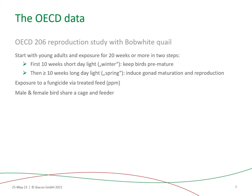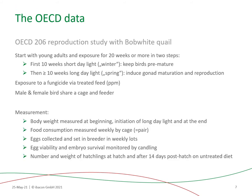We tested this physiological module against an OECD-206 reproduction experiment performed with white quail. As explained in the previous slide, this experiment started with young adults and lasted 20 weeks. In the first 10 weeks, the birds were kept immature, then gonad maturation and reproduction was induced. The exposure to the compound was done via treated food, and one male and one female were sharing a cage and a feeder.